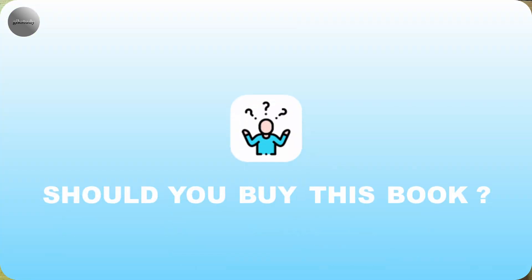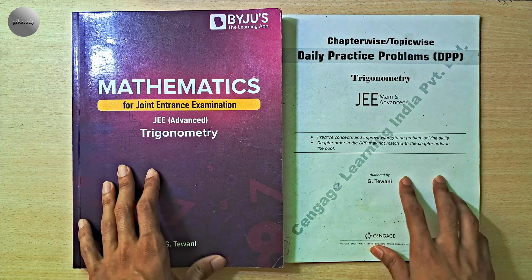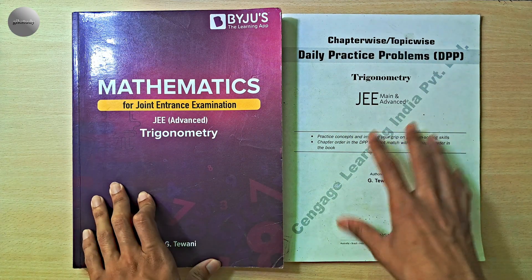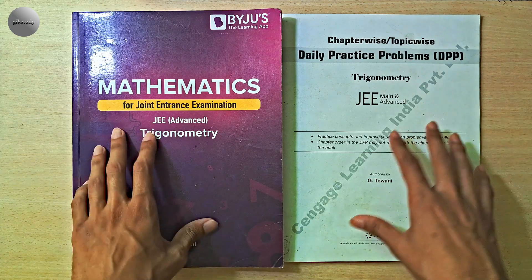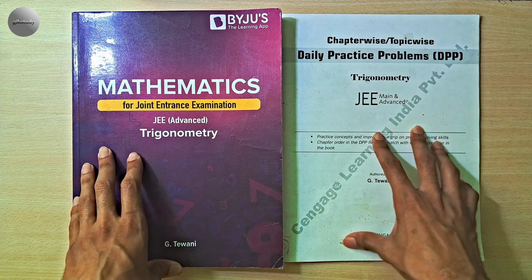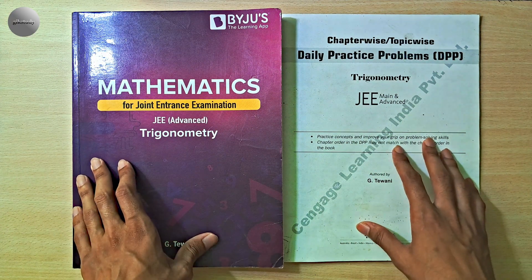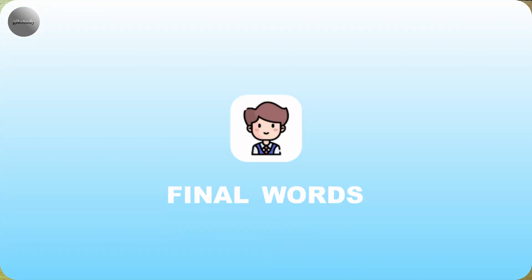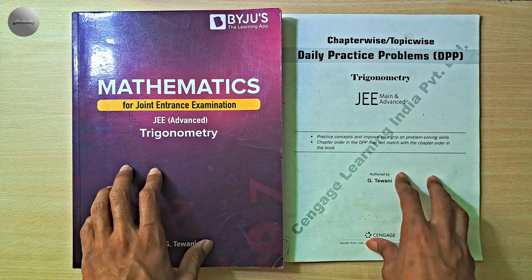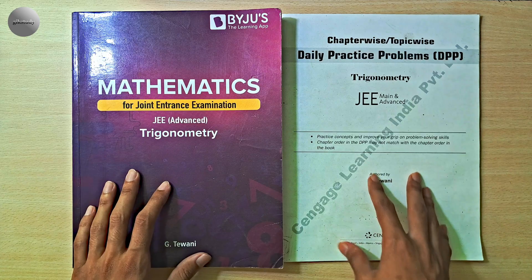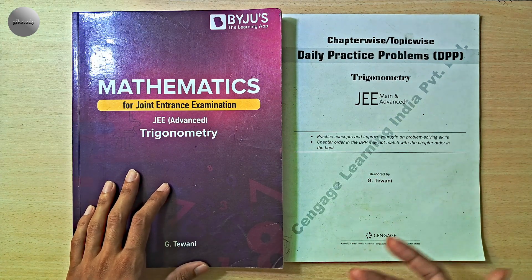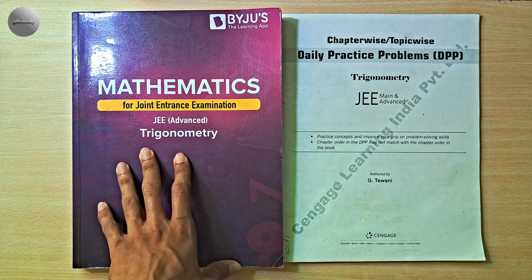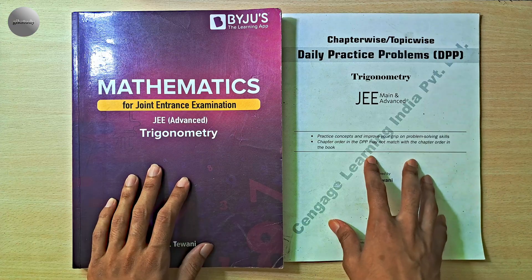Should you buy this book? If you are a self-studying student not using coaching modules, this is one of the best choices in the market. Students with basic understanding who want lots of practice will benefit from both the theory and the question bank. For those targeting JEE Advanced specifically, Cengage is one of the top choices. The book offers great practice and good explanations, but you need a basic foundation to start, a lot of time to cover all the questions, and a willingness to dive deep into trigonometry.